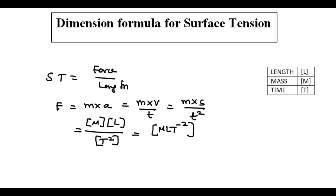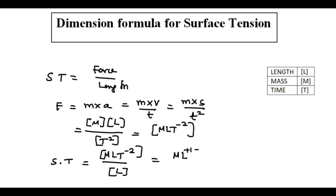So this is the dimension formula for the force. And now we are going to write the dimension formula for the surface tension. The force dimension is given by M L T power minus 2, and that is divided by the length. The length is given by the dimension bracket L, and if you bring it to the top, M L power plus 1 and minus 1, and then T power minus 2.